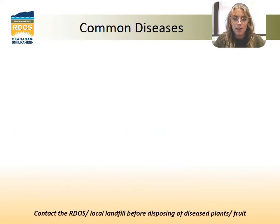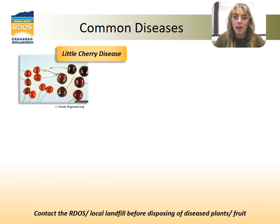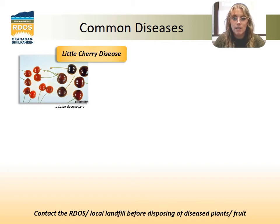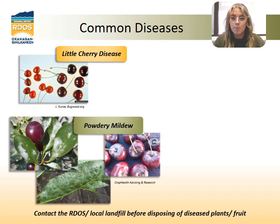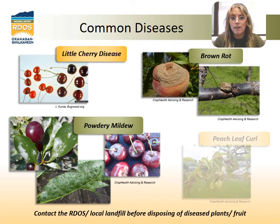Pests and disease can sometimes go hand in hand, where pest problems can weaken the tree and welcome disease, and vice versa. Little cherry disease is a recent disease that can decimate cherry crops in the entire region and should be checked for diligently each year. We are in a very high risk area for this disease, and if you have smaller than average fruits that fail to fully ripen, lack flavor, have dull coloring, or leaf reddening, you may have this disease and it is your responsibility by law to prevent and control it. Another big problem disease that affects many fruit types is powdery mildew. Affected plant parts should be pruned off to prevent its spread. Additionally, brown rot and peach leaf curl may affect your tree and should be dealt with right away to prevent spread and significant damage.